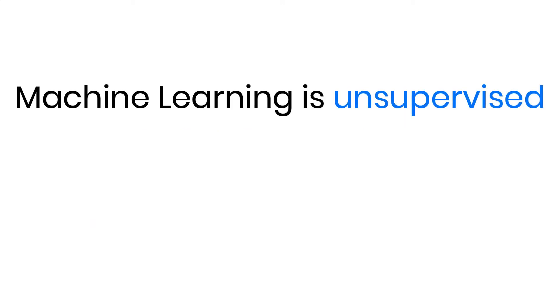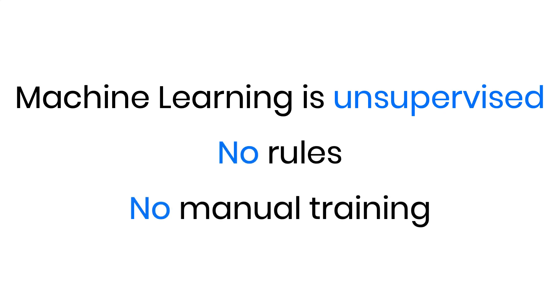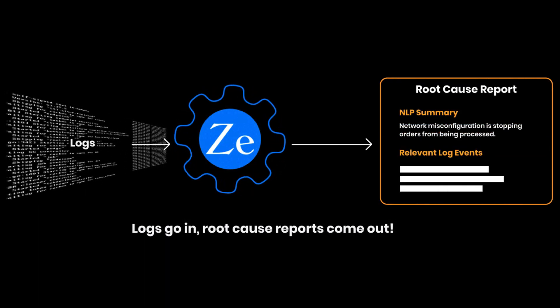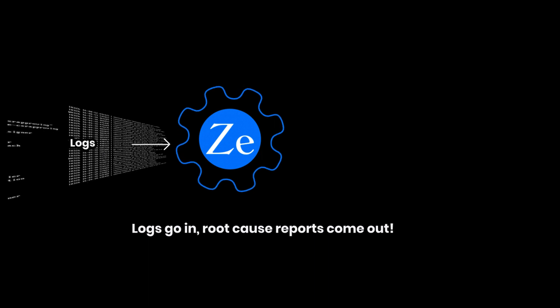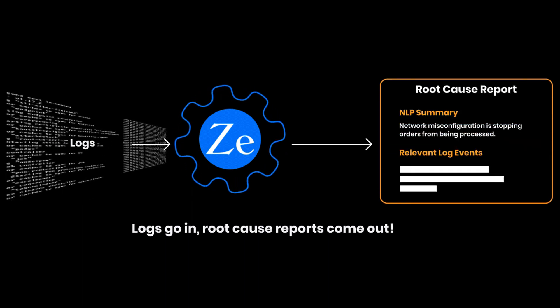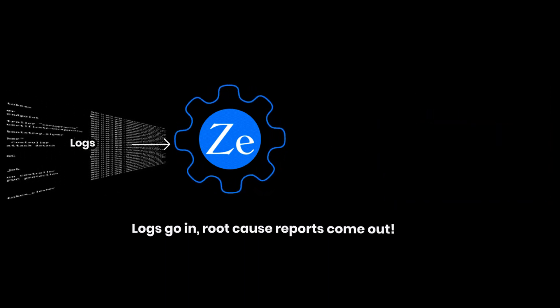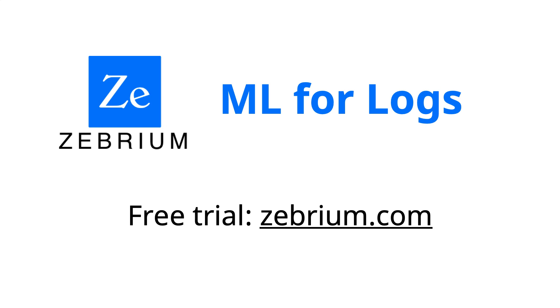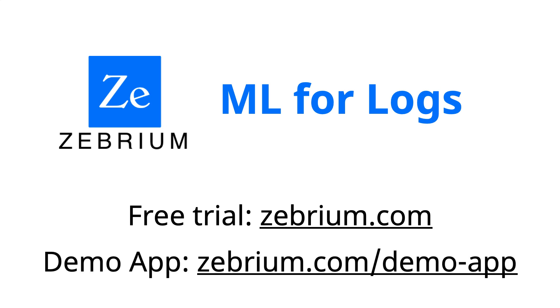The machine learning is unsupervised — you don't have to build any rules or perform any kind of manual training to use it. All you do is feed in your app and infrastructure logs and Zebrium will produce a concise root cause report whenever a problem occurs. Zebrium works with any kind of application and can be used standalone or integrated with your existing monitoring, logging, and incident management tools. To get started, sign up for a free trial at zebrium.com. You can even try Zebrium with the same online web app used in this video by following the instructions here. Thank you.